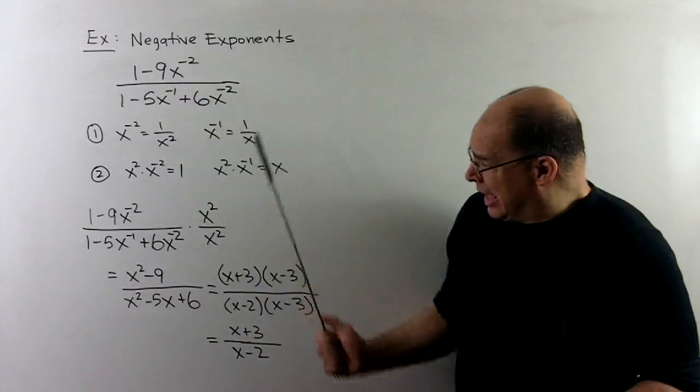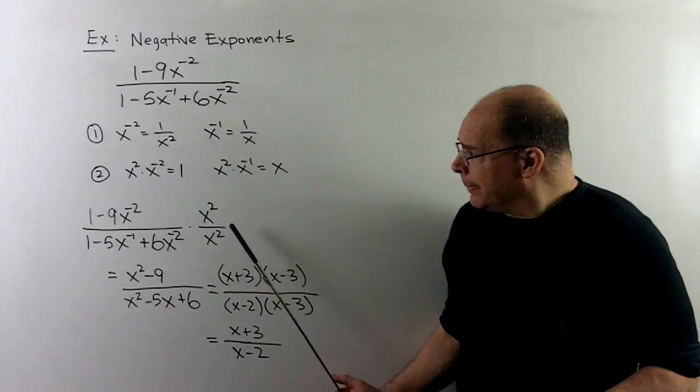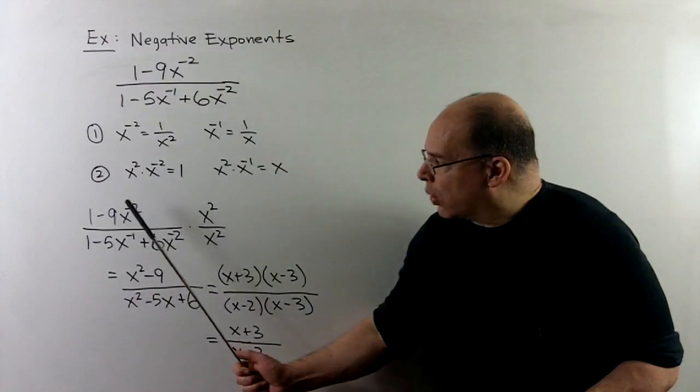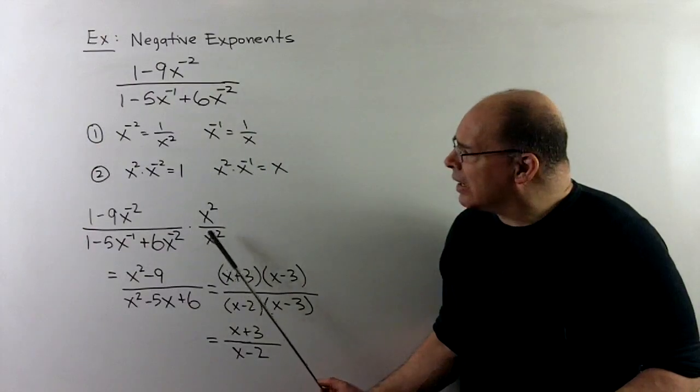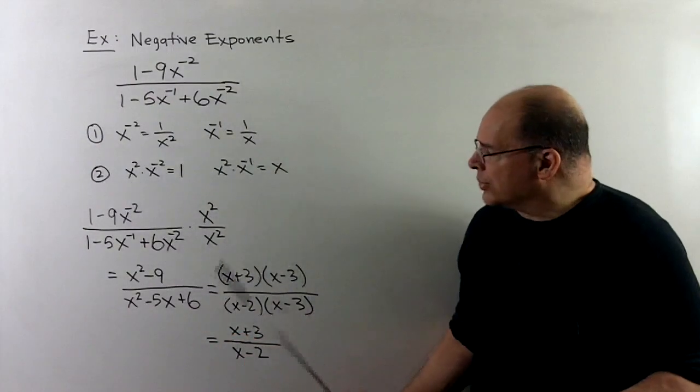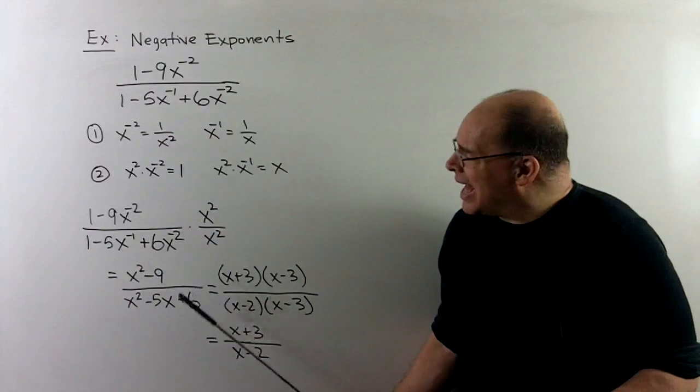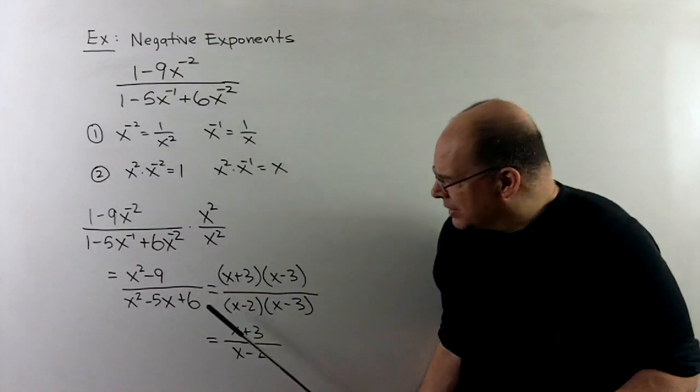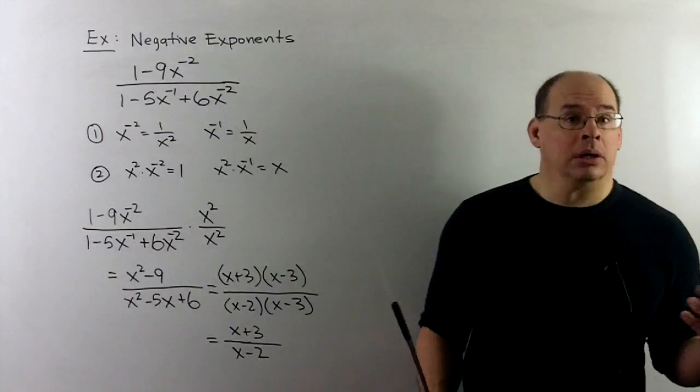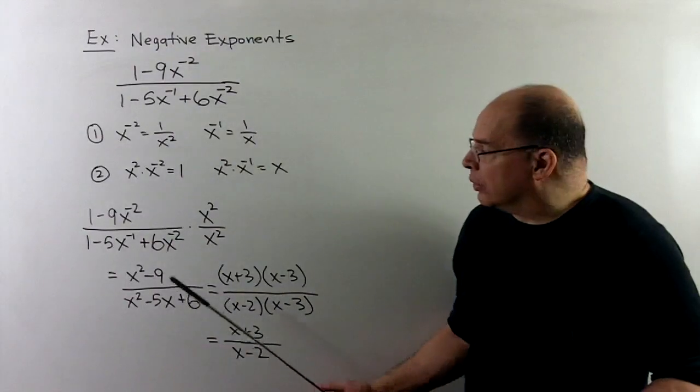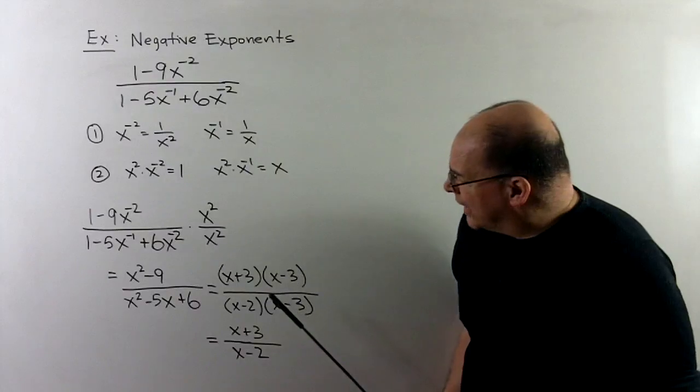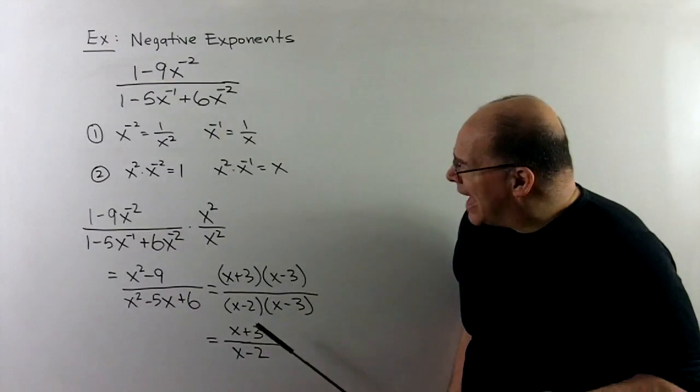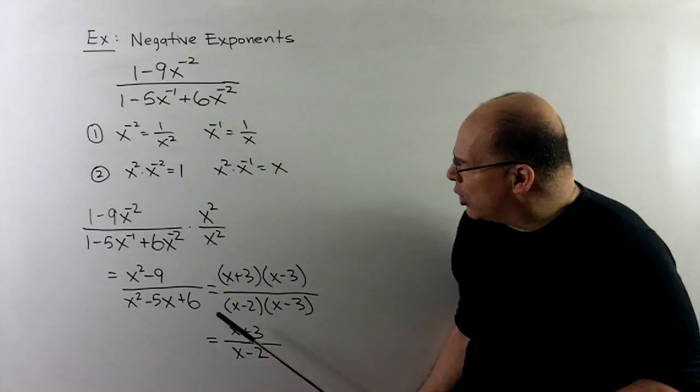So what we'll do, I'll multiply x squared over x squared. We'll distribute as before. We'll assume that we have parentheses around numerator and denominator, and then what's going to come out noting these rules? I'll have x squared minus 9 over x squared minus 5x plus 6. These factor. The numerator is a difference of two squares. We can cancel the x minus 3 terms, and then that'll leave us with x plus 3 over x minus 2.